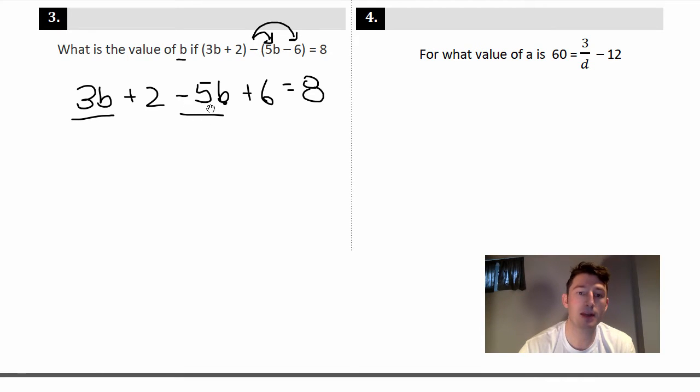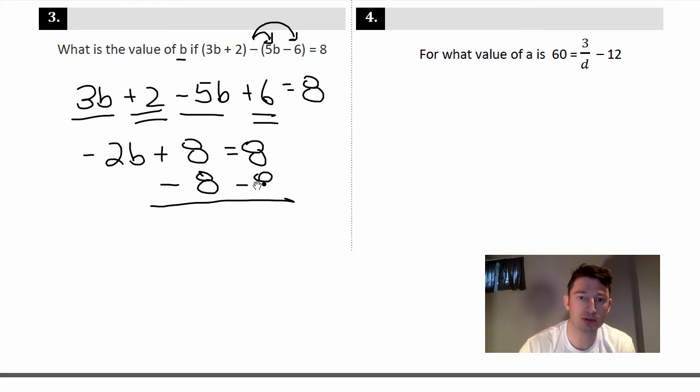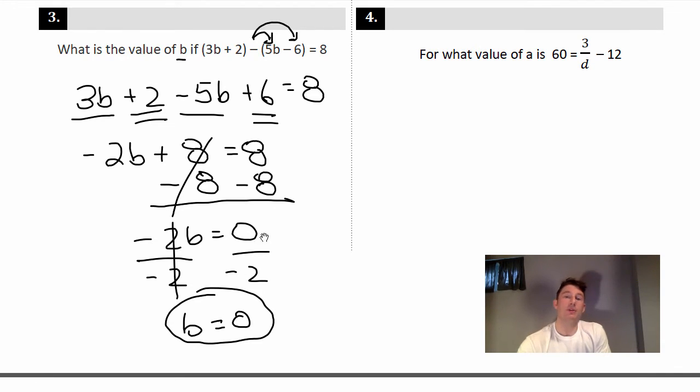So now Step 1, combine like terms. I'll underline the same stuff: 3b - 5b is negative 2b. There's a 2 and there's a 6. 2 + 6 is 8, and what do you know, the whole thing equals 8. So minus everything that we can away from the variable, so we have negative 2b = 0. Divide or multiply numbers away from the variable, and we get b = 0.